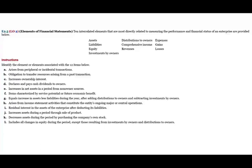Let's take a look at this exercise to illustrate the concept of the financial statement elements. Below are 10 interrelated elements that are directly related to measuring the performance and financial status of an enterprise: assets, liabilities, equity, investment by owners, distribution to owners, comprehensive income, revenues, expenses, gains, and losses. They're giving you some definitions and you need to match the definition with the term.